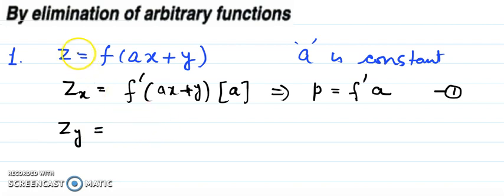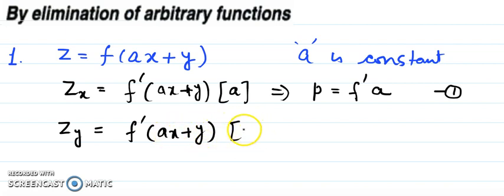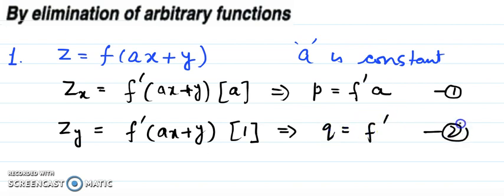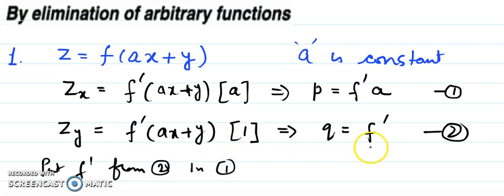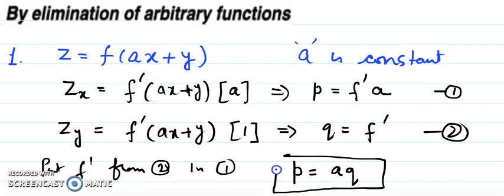Similarly, differentiate with respect to y. On the right-hand side, first differentiate the function ordinarily, then the derivative of (ax + y) with respect to y is 1. So we get q = f'(ax+y)·1. Now substitute f' from equation two into equation one, so p = a·q. This is a first-order partial differential equation.